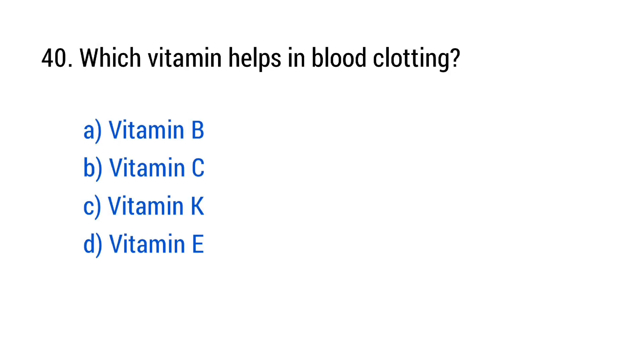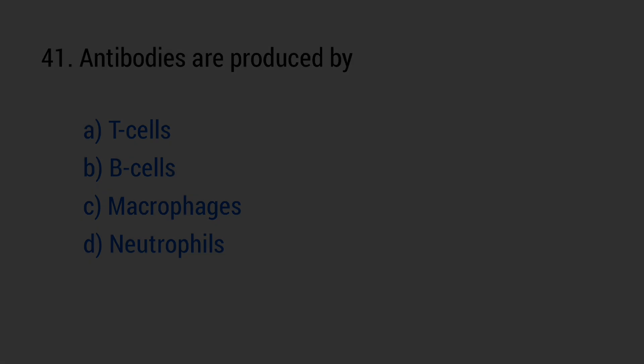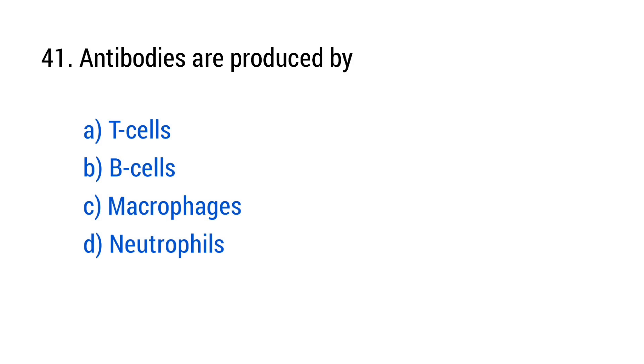Question number 39. Nissl's granules are found in? The right answer is option C, neurons. Question number 40. Which vitamin helps in blood clotting? The right answer is option C, vitamin K. Question number 41. Antibodies are produced by? The right answer is option B, B cells.